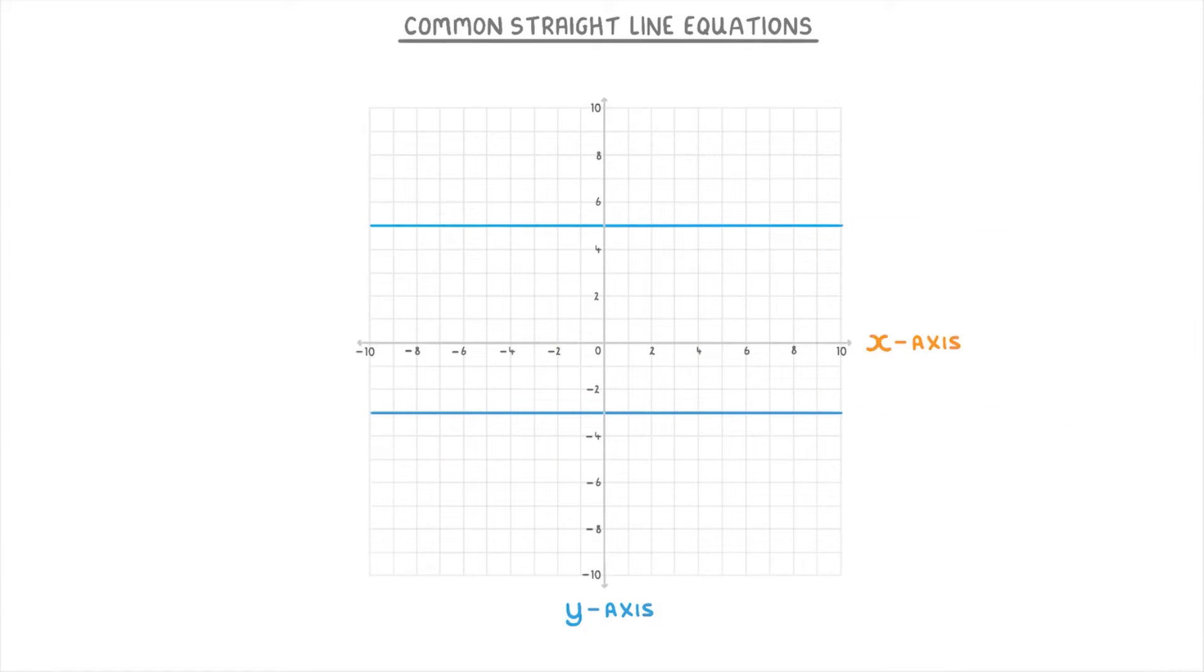The same thing works for horizontal lines, except this time they'll be y equals something. So the top line here, which crosses the y-axis at 5, would be y equals 5. Whereas the one at the bottom, which crosses at negative 3, would be y equals negative 3.